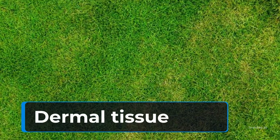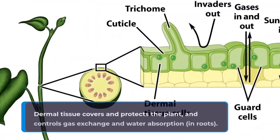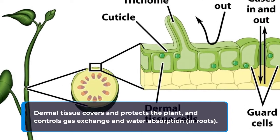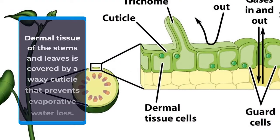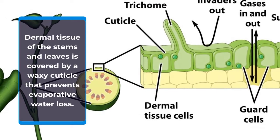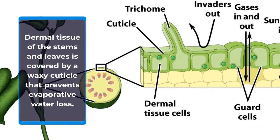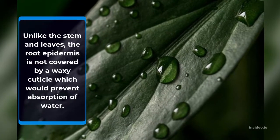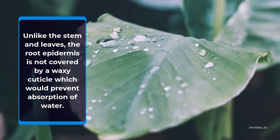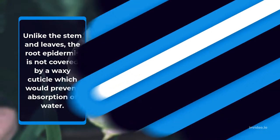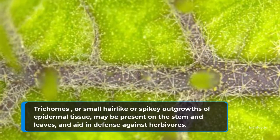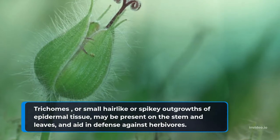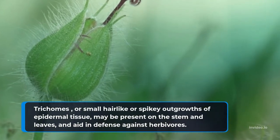Dermal tissue. Dermal tissue covers and protects the plant, and controls gas exchange and water absorption in roots. Dermal tissue of the stems and leaves is covered by a waxy cuticle that prevents evaporative water loss. Unlike the stem and leaves, the root epidermis is not covered by a waxy cuticle, which would prevent absorption of water. Trichomes, or small hair-like or spiky outgrowths of epidermal tissue, may be present on the stem and leaves, and aid in defense against herbivores.